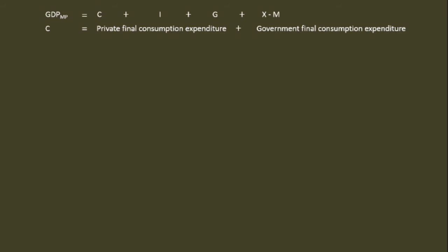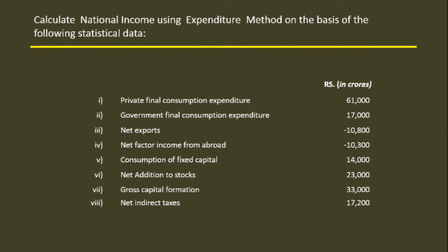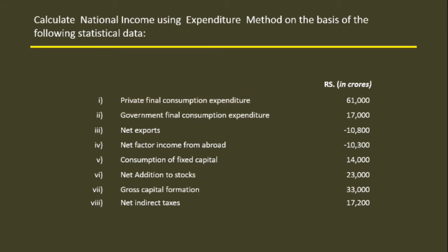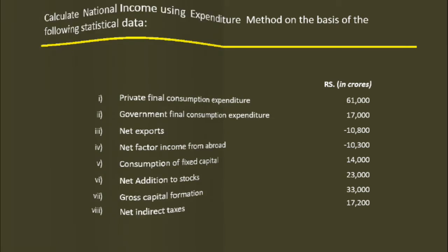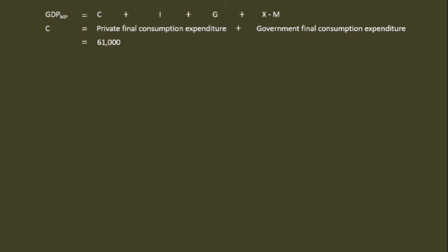In our problem, Private Final Consumption Expenditure is 61,000 crores and Government Final Consumption Expenditure is 17,000 crores. Therefore, total Consumption Expenditure C equals 61,000 plus 17,000 — that is, 78,000 crores.